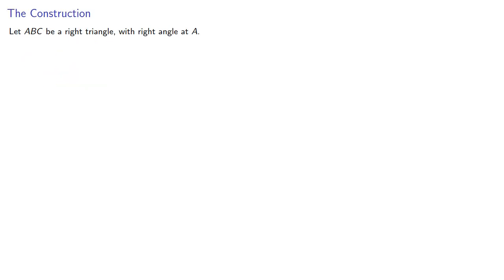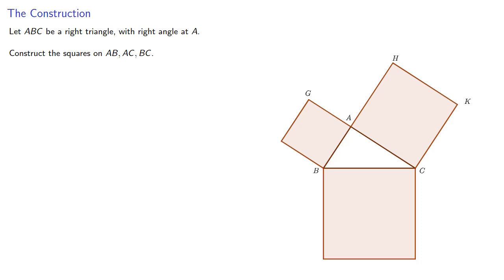The construction proceeds as follows: let ABC be a right triangle with our right angle at A. Construct the squares on the sides AB, AC, BC, join BKAE, and then drop AL perpendicular to BC.